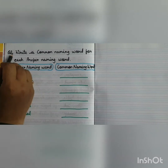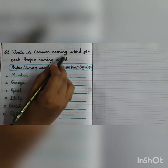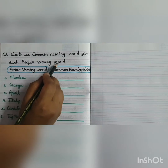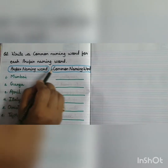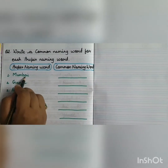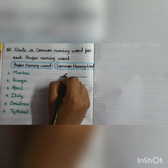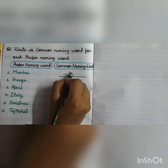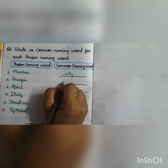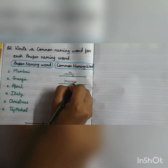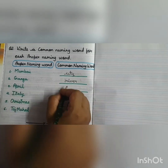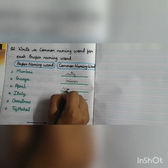Question number 2: write a common naming word for each proper naming word. Proper naming word and common naming word. Mumbai — city. Ganga — river. April — month.